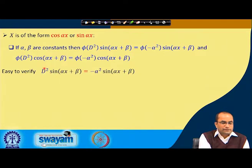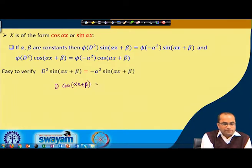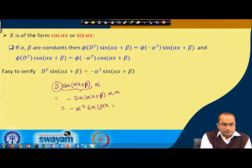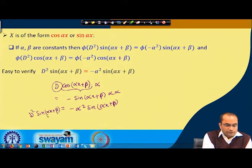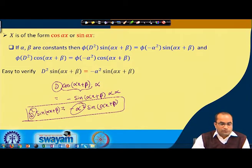This is easy to verify: applying D² on sin(αx + β), we first get D·[α·cos(αx + β)] = −α²·sin(αx + β). So D² applied to sin(αx + β) equals −α²·sin(αx + β), confirming that D² is replaced by −α². The same can be proved for the cosine function.